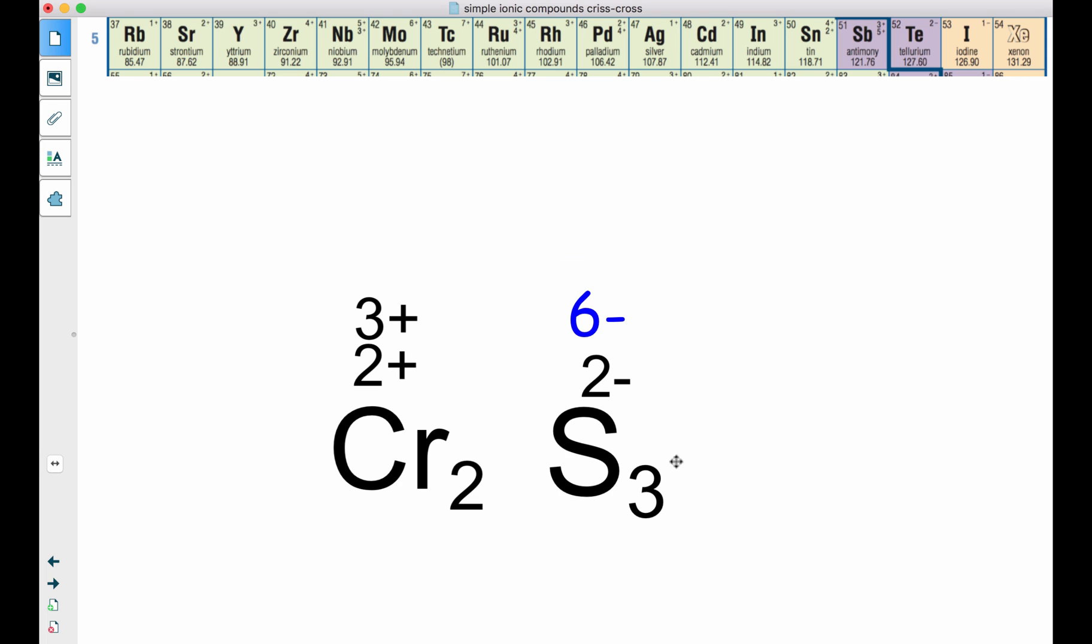That's my overall charge for all of my sulfurs, which basically means my chromiums need to be a 6+. We need to have these two charges be equal but opposites. So if I have two chromiums, 2 times +2 would be +4. That doesn't work. But 2 times +3 gives me the +6. So we have to go with the 3+. So 2 times 3 is 6.